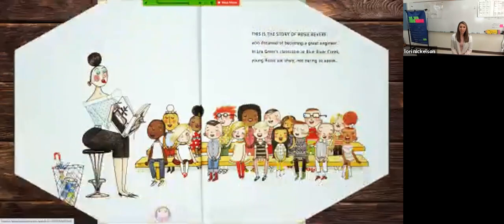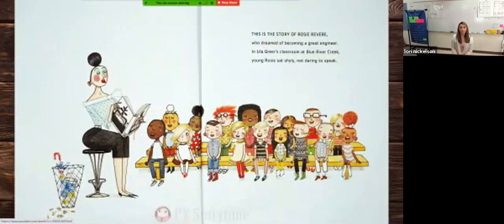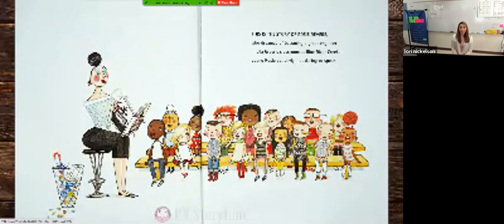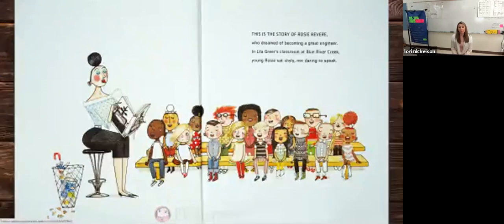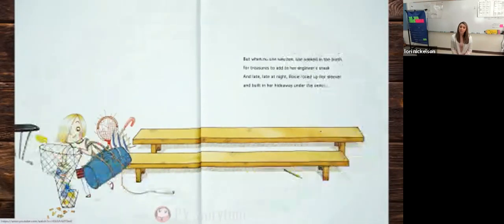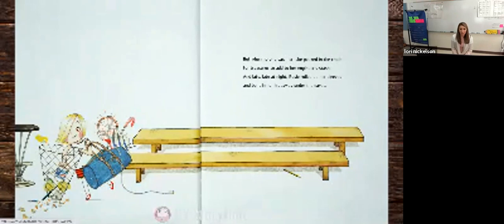This is the story of Rosie Revere who dreamed of becoming a great engineer. In Lila Greer's classroom at Blue River Creek, young Rosie sat shyly, not daring to speak. But when no one saw her, she peeked in the trash for treasures to add to her engineer's stash.